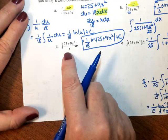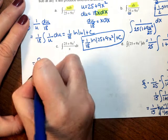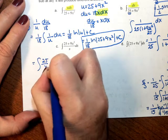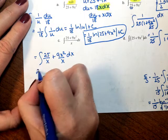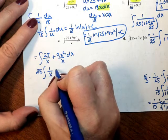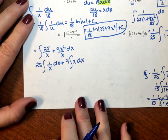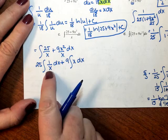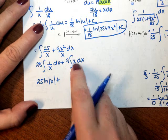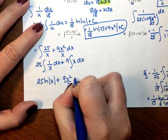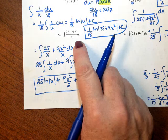For letter C, notice I just took the reciprocal of A. There's a single monomial in the denominator, so I'm going to split this up into two smaller fractions: 25 over x plus 9x squared over x dx. I can pull the 25 out, and simplify 9x squared over x to 9x, pulling the 9 out. Now I can integrate term by term: the integral of 1 over x is the natural log of x, and when I integrate x that's x squared over 2, giving 9x squared over 2 plus C. When you have a single monomial in the denominator, you can split it up into smaller fractions.